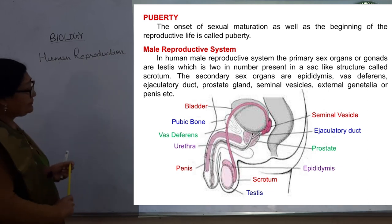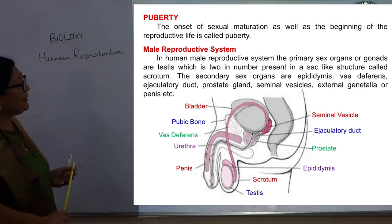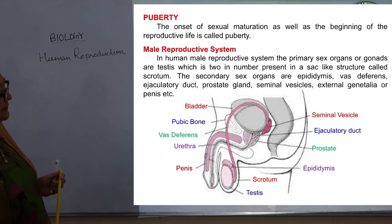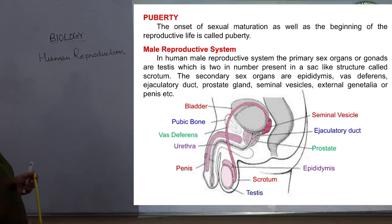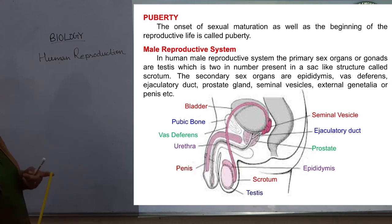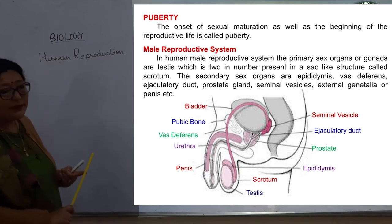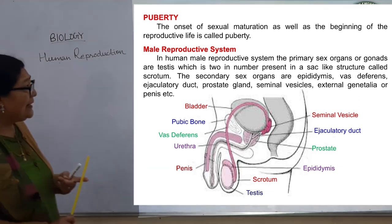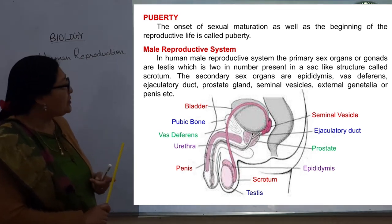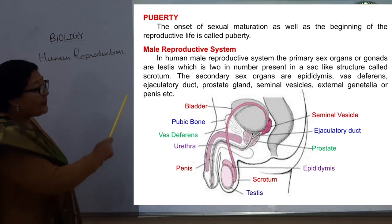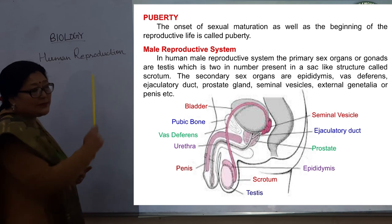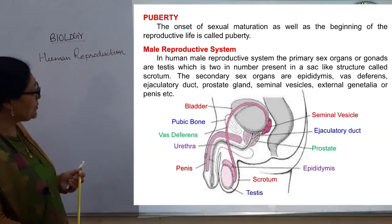In the human male reproductive system, the primary sex organ or gonads are the testes. The testes are two in number, present in a sac-like structure called scrotum.